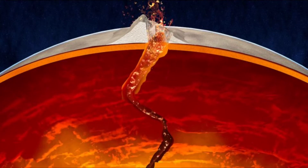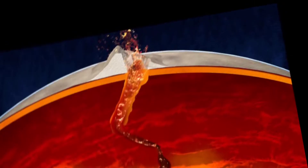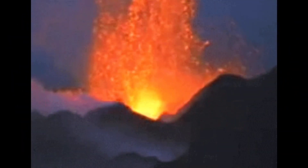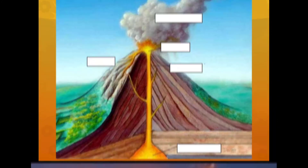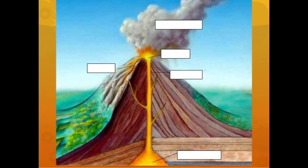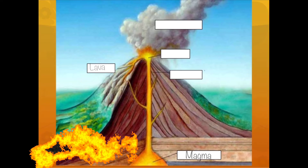This magma is pushed upwards and it comes out of the volcano in the form of lava. When it comes out it's called lava, and when it stays inside the earth's crust it is called magma.